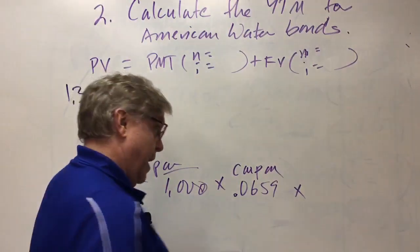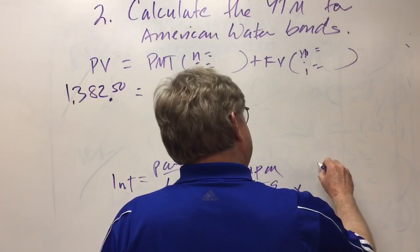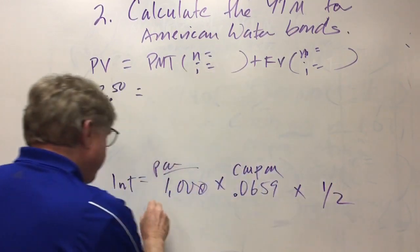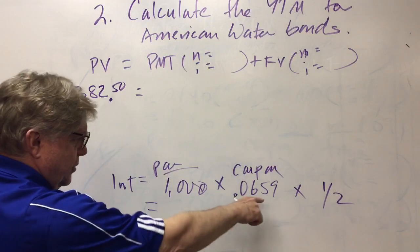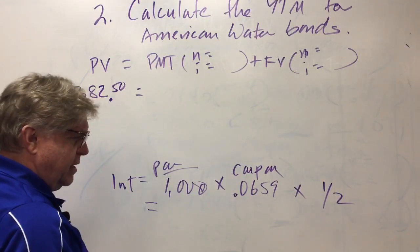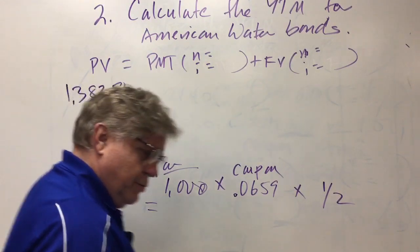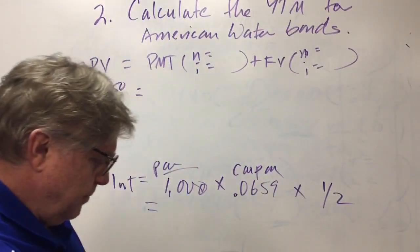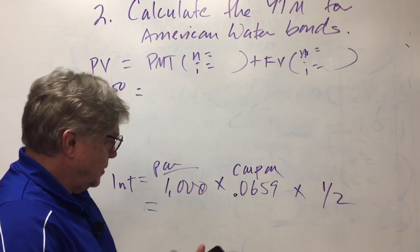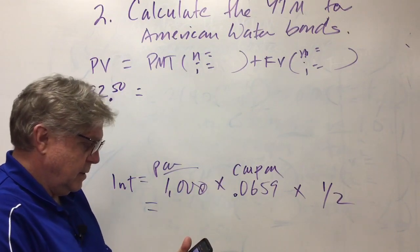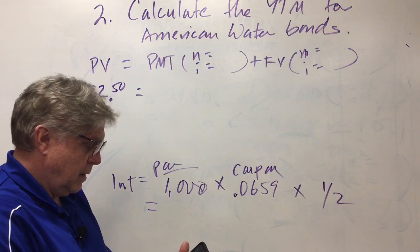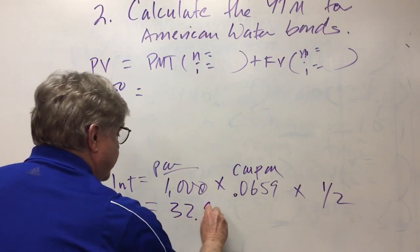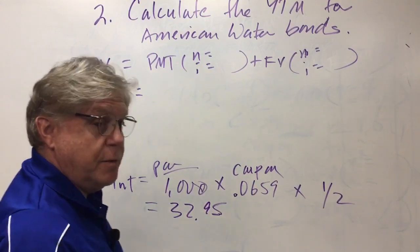The coupon rate here is 6.59 percent, or 0.0659. Of course, we're assuming, as most corporate bonds do, that they pay interest semi-annually. So this is basically an adjustment for the semi-annual interest payments. A thousand times 0.0659 is $65.90 divided by two. Let me grab my calculator so I can calculate these. $65.90 divided by two is $32.95, so there is our semi-annual coupon payment.